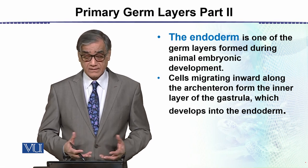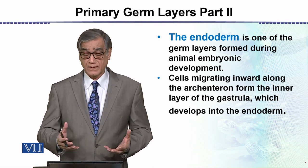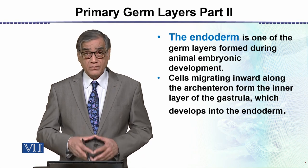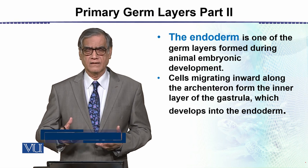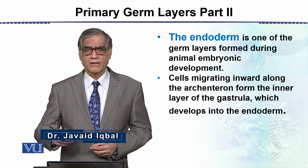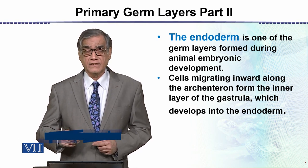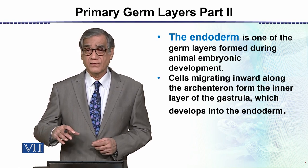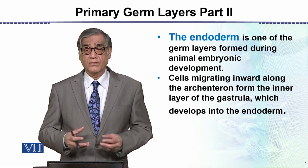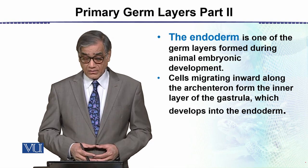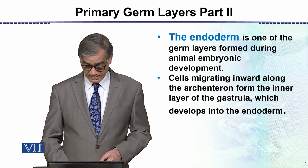Endoderm is one of the germ layers that is formed during animal embryonic development. We have seen it in gastrulation. Cells migrating inward along the archenteron — which is a depression called invagination — are the cells which are first outside and then start moving inward. They develop an endoderm, which later on develops into the digestive tract or related structures.